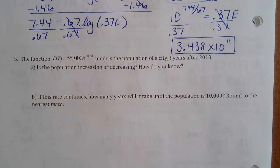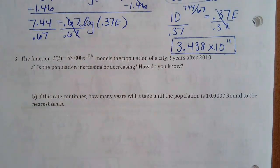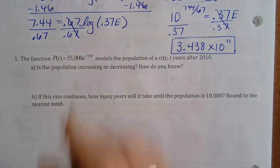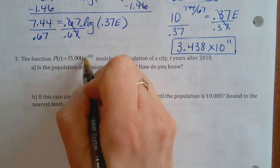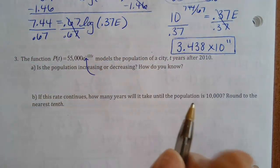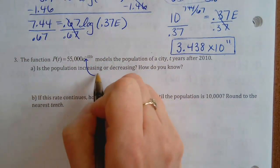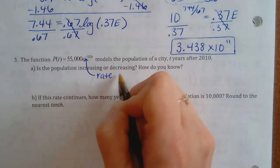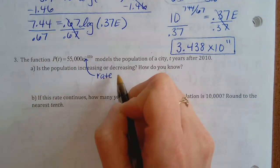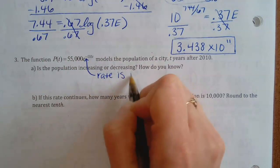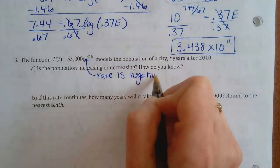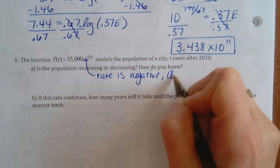Number three: the following function models the population of a city T years after 2010. Is the population increasing or decreasing, and how do you know? It's base e — that's a PERT function. E is a positive number, but the negative rate means the rate is negative. If the rate of growth or decay is negative, the entire function is decreasing.